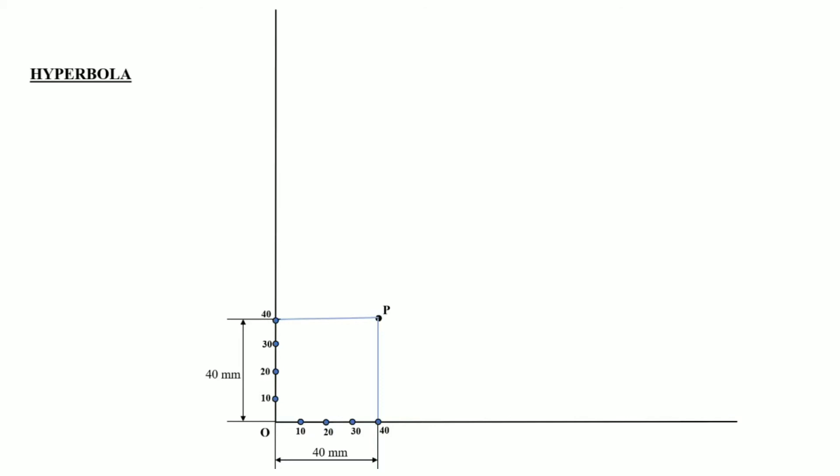Now to draw a hyperbola curve passing through point P, we will divide the vertical and horizontal lines from point P over the x-axis and y-axis into equal number of parts. The vertical line from point P to the x-axis is 40 mm, so we can divide this line into four equal parts. Similarly, the horizontal line drawn over the y-axis can also be divided into four equal parts.